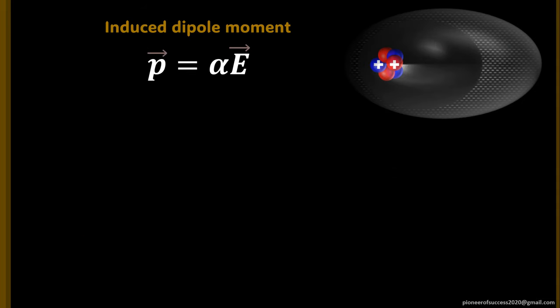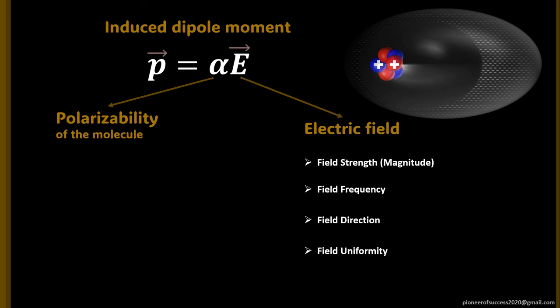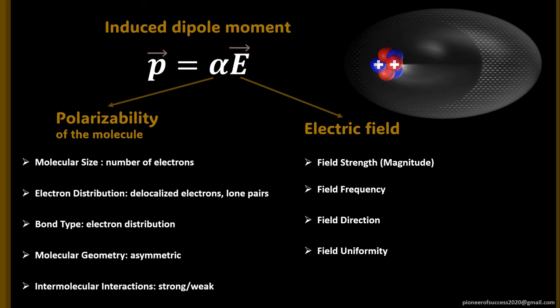This re-radiation of the electromagnetic field, decided by the induced dipole moment of the molecule, is dependent on two prime factors: the incoming electric field, which is an external factor, and the polarizability of the molecule, which is an intrinsic factor. The strength of the electric field decides how strongly it will polarize the molecule, whereas its frequency decides the oscillation of the molecule getting polarized.